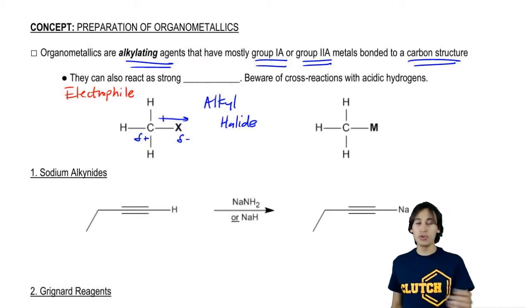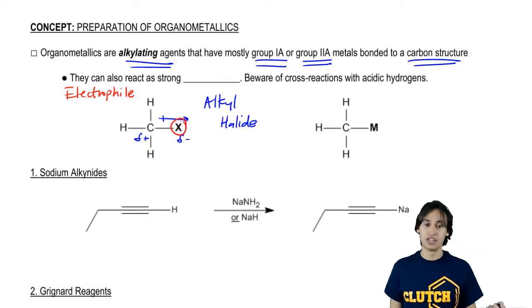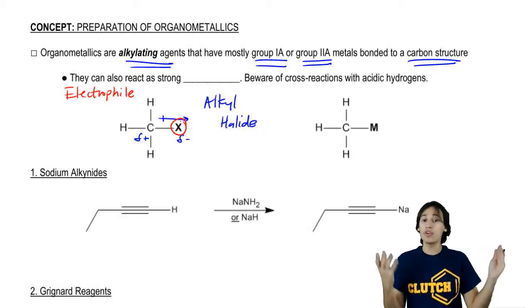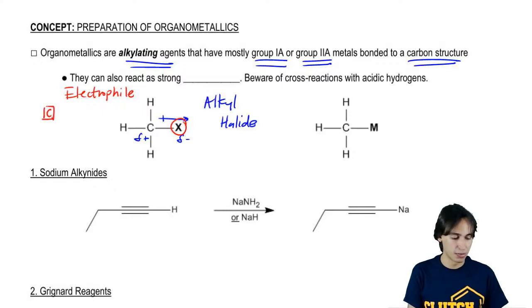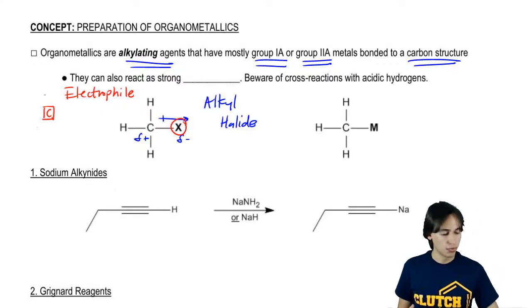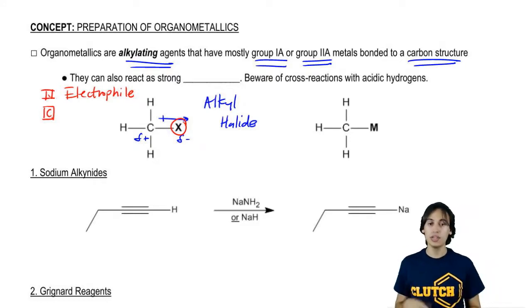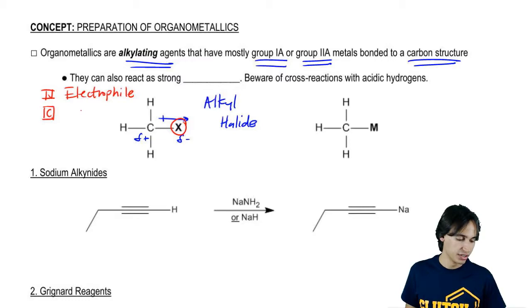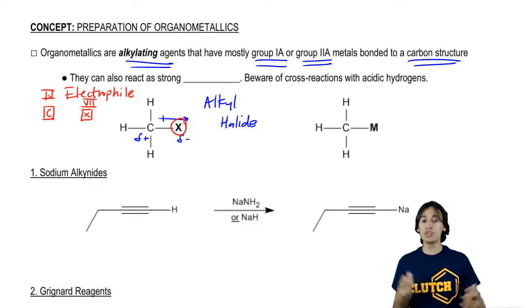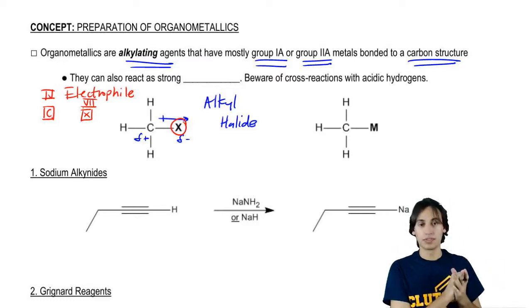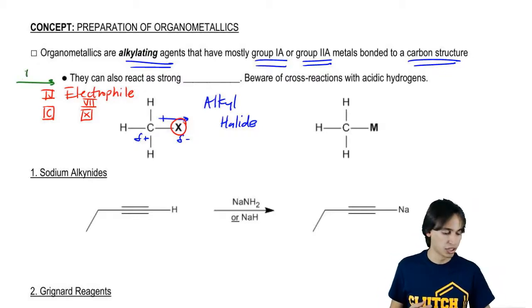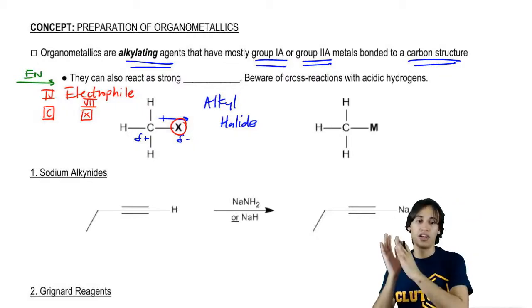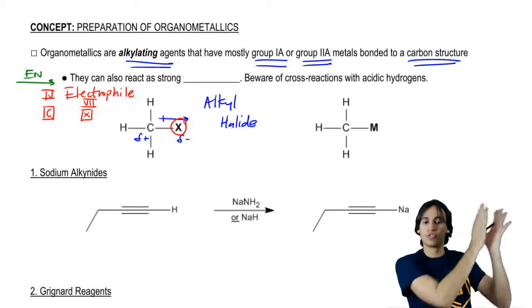But organometallics are different because notice that the X stands for halogen. What group is halogen in? Let's start off with carbon. Carbon, if I was just to draw my ghetto periodic table that I do so often, carbon is in group four. Halogen is all the way over here in group seven. So which one is more electronegative, carbon or halogen? Obviously the halogen, right? Because as you move to the right in the periodic table, you get more electronegative.